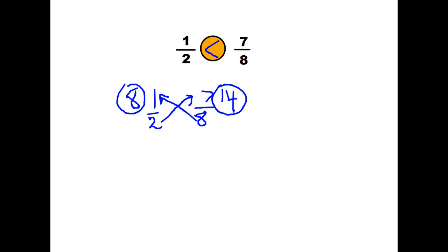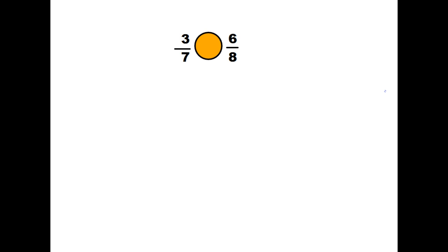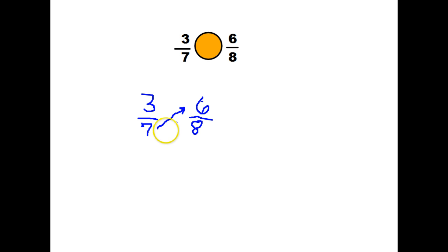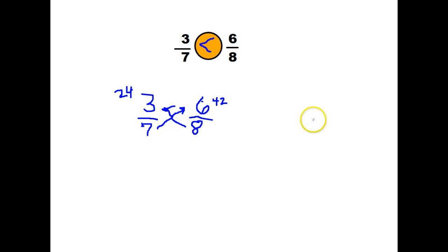Let's try another. This time we're looking at something that's a little bit closer: 3 sevenths and 6 eighths. They're both fairly close to half. So let's go ahead and write this out. We're going to go across to multiply: 7 times 6 is 42. And going the other way, 3 times 8 is 24. So you ask yourself: which one's bigger, 42 or 24? Well, 42 is by far bigger than 24.